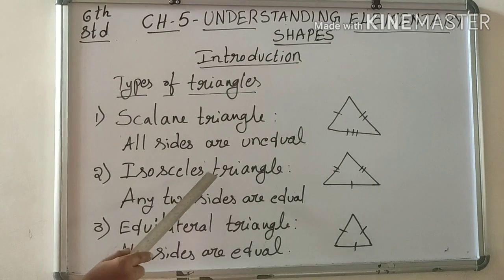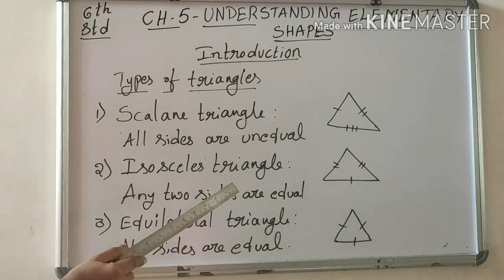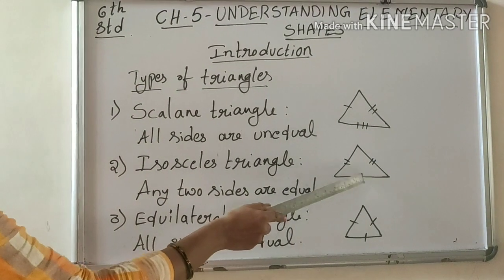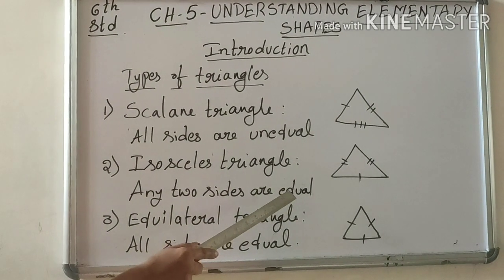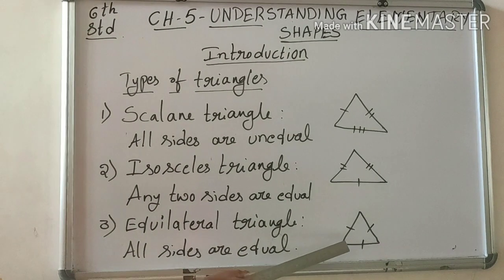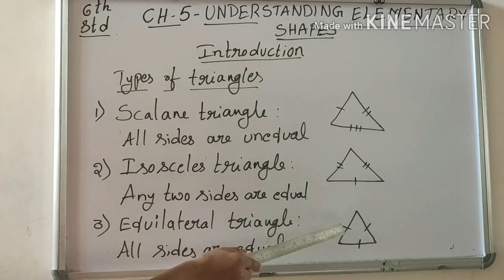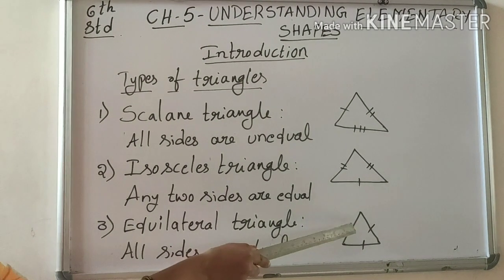Next, isosceles triangle. Isosceles triangle mein two sides equal hota hai, third one unequal hoga. Any two sides are equal. Next, equilateral triangle. Equilateral triangle mein all three sides equal hoga. Then, the triangle is called equilateral triangle.